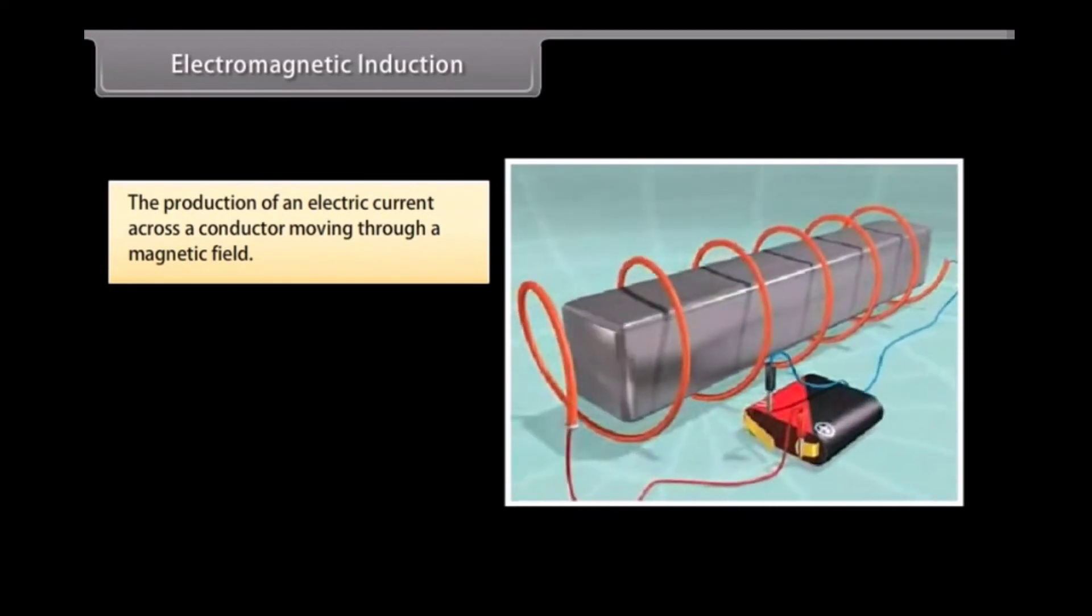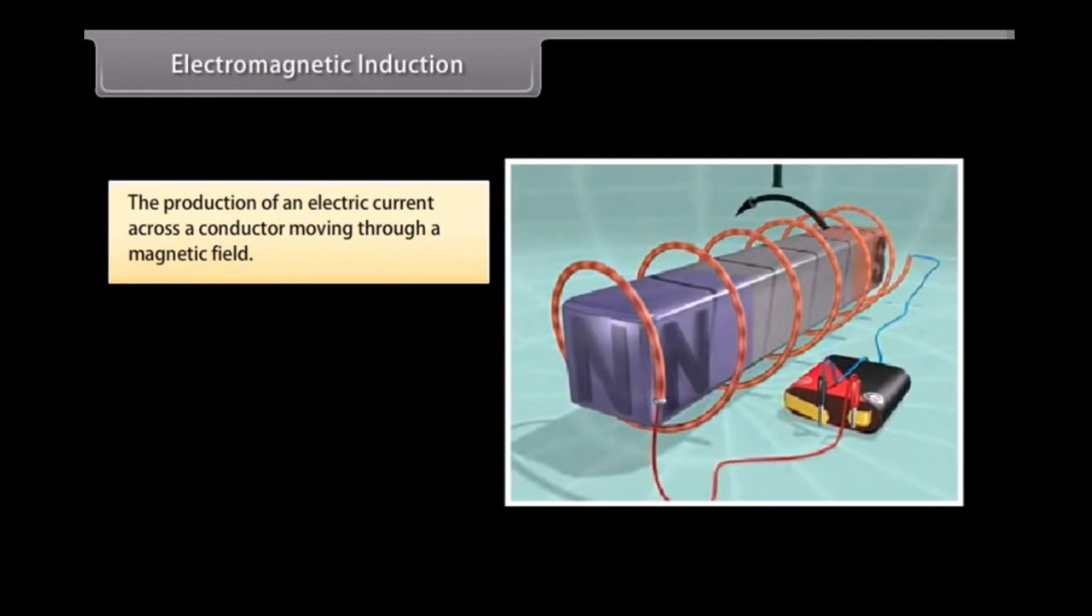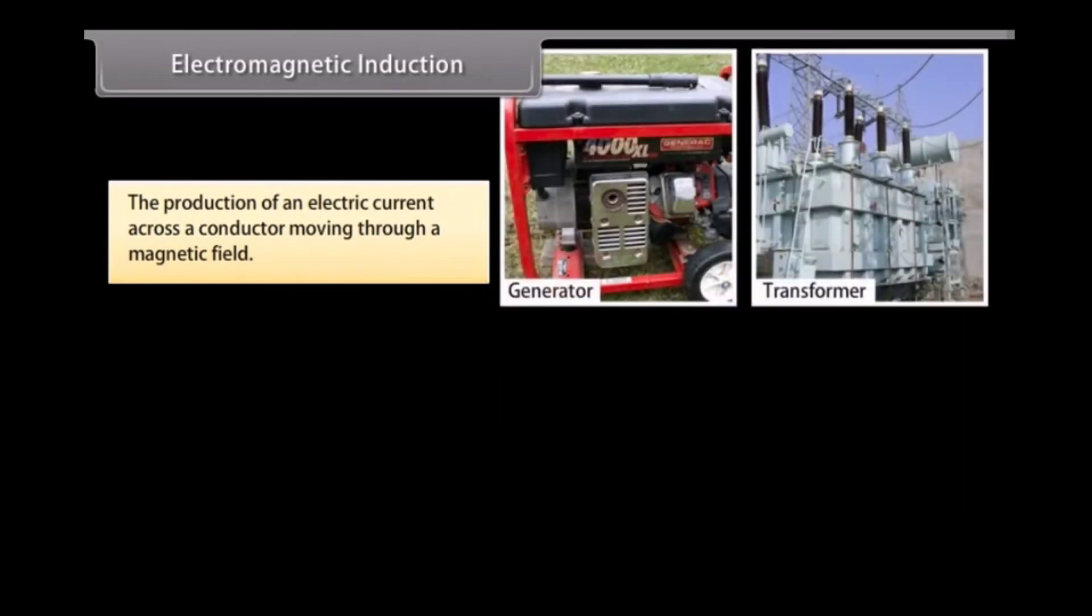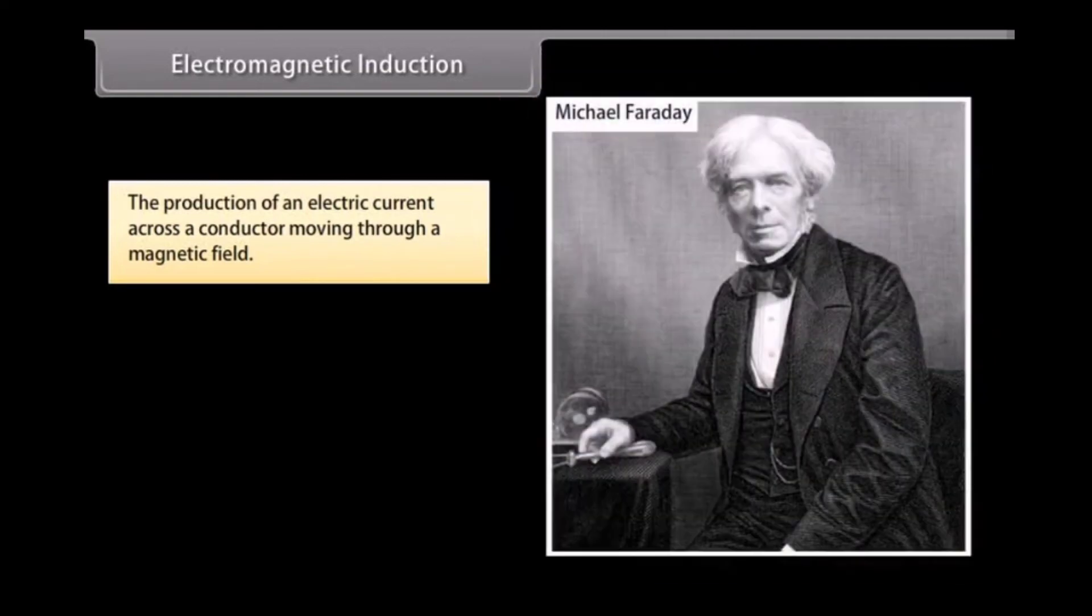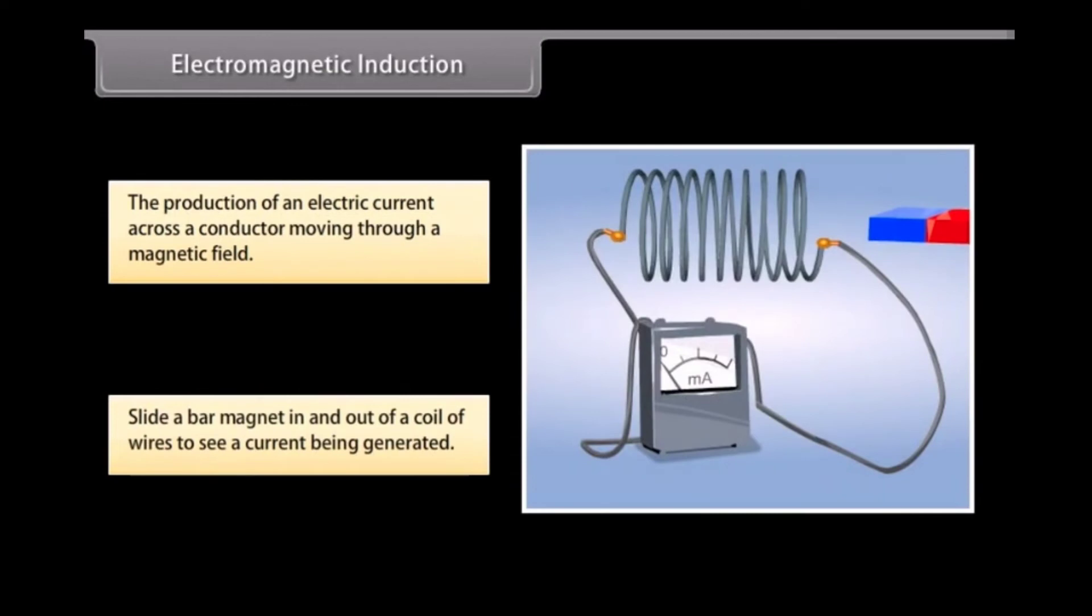Electromagnetic induction. The production of an electric current across a conductor moving through a magnetic field is called electromagnetic induction. For example, generators, transformers, induction motors, electrical motors, synchronous motors, and solenoids all use electromagnetic induction. Michael Faraday was a British scientist, chemist, physicist, and philosopher who discovered the magnetic field, electromagnetic induction, diamagnetism, and electrolysis. His experiments included the discovery of generating currents by moving a magnet. Let us try sliding a bar magnet in and out of a coil of wires. You see that the wires generate a current. This is known as electromagnetic induction.